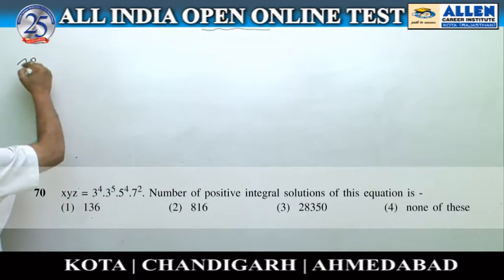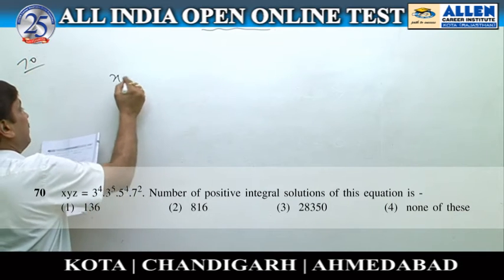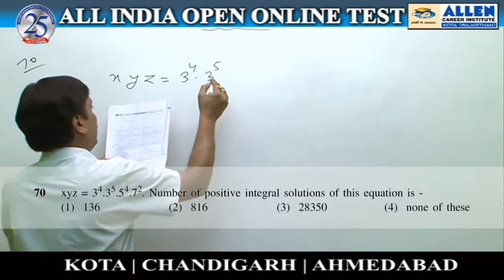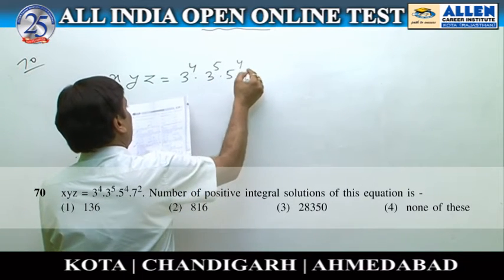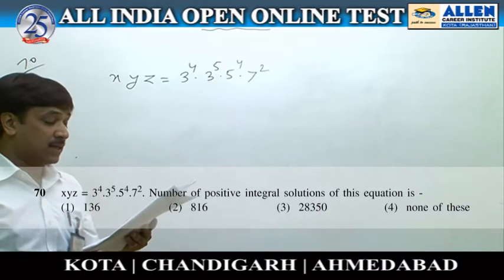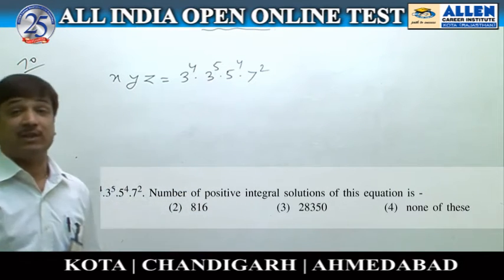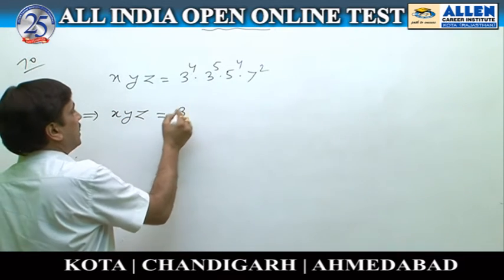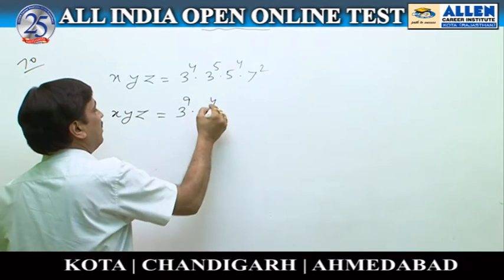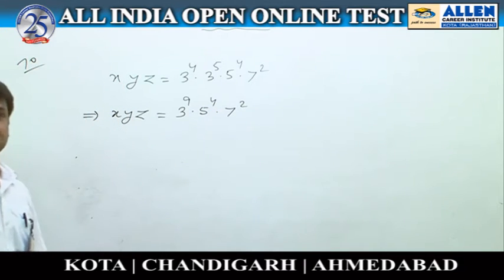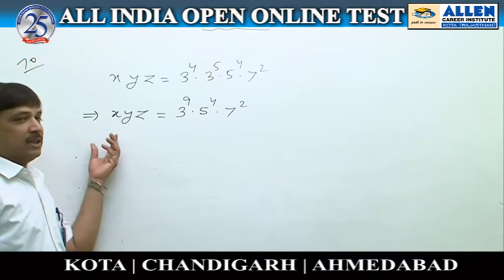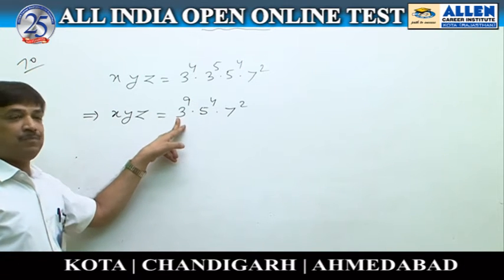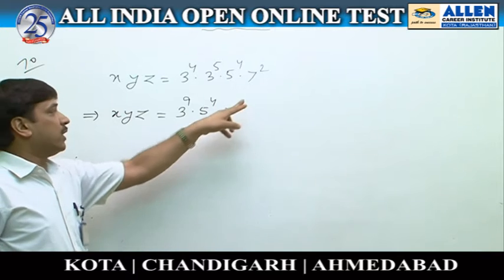Question number 70. In this question, xyz = 3⁴ × 3⁵ × 5⁴ × 7² is given, and we need to find the number of positive integral solutions. We can rewrite this as xyz = 3⁹ × 5⁴ × 7². This equation can be treated as distributing 9 things of one kind, 4 things of a second kind, and 2 things of a third kind.